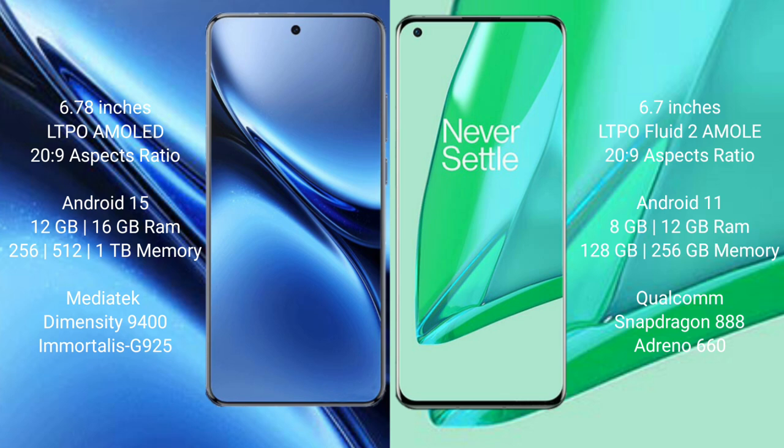Vivo X200 Pro comes with 12GB or 16GB RAM and 256GB or 512GB internal storage, powered by the MediaTek Dimensity 9400 processor and GPU 925. OnePlus 9 Pro comes with 8GB or 12GB RAM and 128GB or 256GB internal storage, powered by the Qualcomm Snapdragon 888 processor and GPU 960.